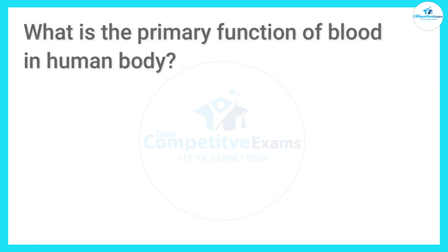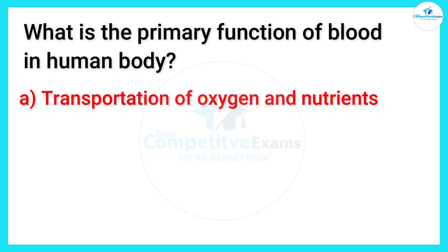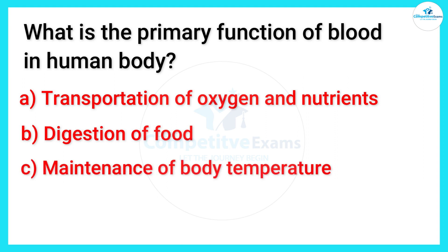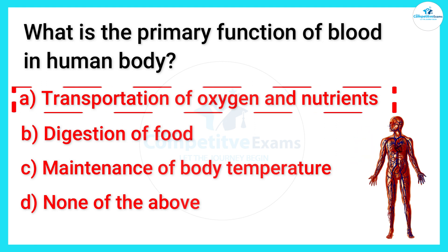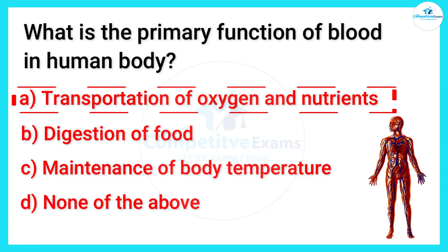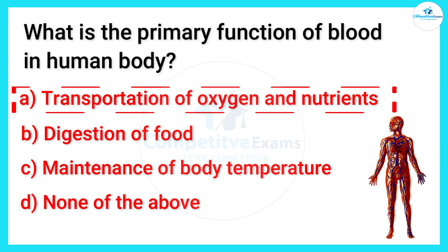What is the primary function of blood in the human body? The options are: transportation of oxygen and nutrients, digestion of food, maintenance of body temperature, or none of the above. The answer is A — transportation of oxygen and nutrients.